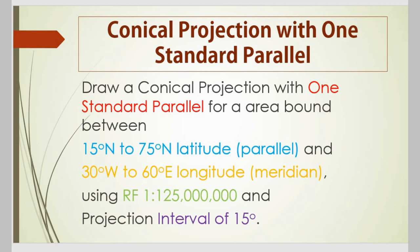The question is: draw a conical projection with one standard parallel for the area bounded between 15 degrees north to 75 degrees north latitude and 30 degrees west to 60 degrees east longitude, using RF 1:125 million and a projection interval of 15 degrees. There are certain terminologies in this question which need explanation.